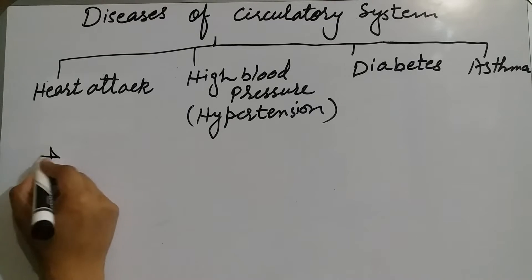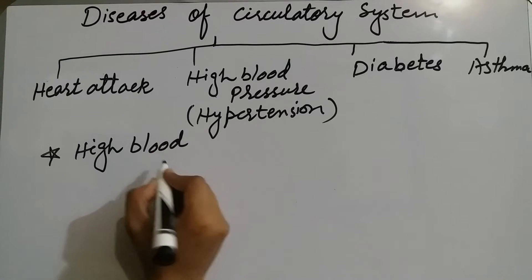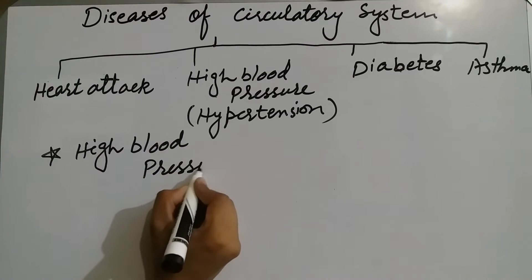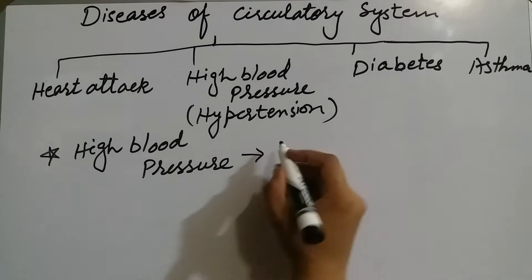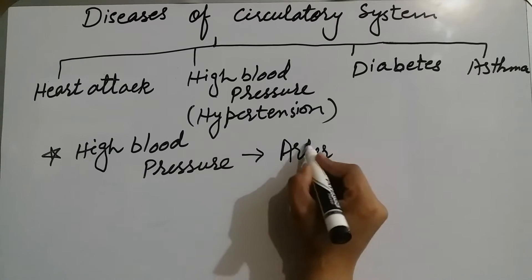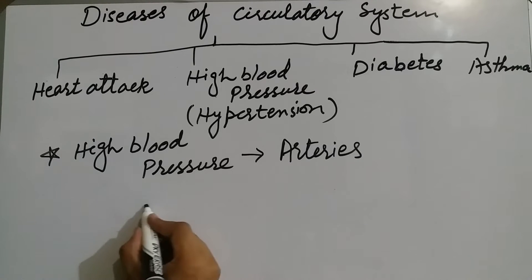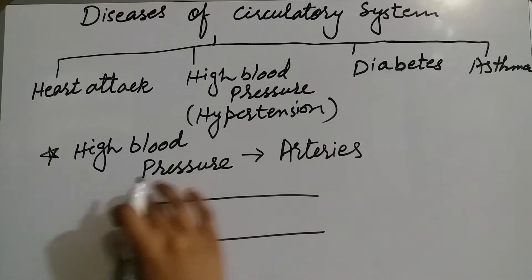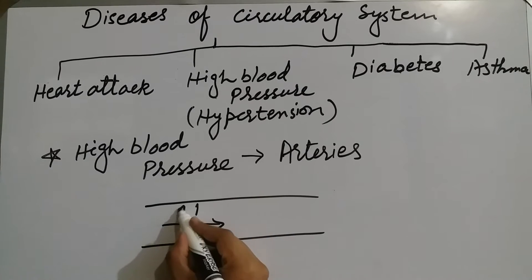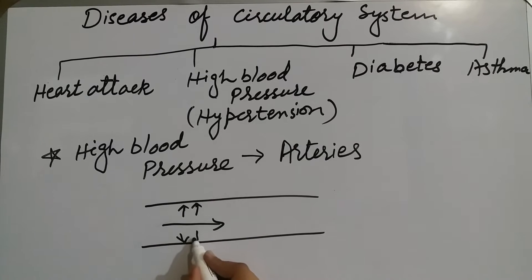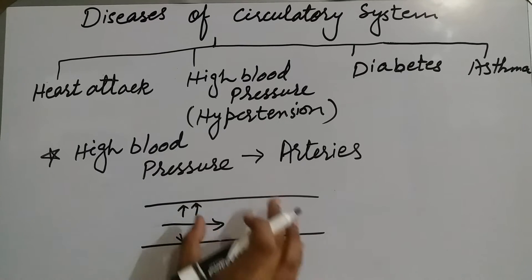High blood pressure کیا ہے؟ جیسا کہ اس کے نام سے ظاہر ہے، blood کا pressure زیادہ ہونا — اور کہاں؟ in the vessels جو کہ blood کو پوری body تک لے جاتی ہیں، وہ vessels arteries کہلاتی ہیں۔ Arteries کے اندر blood کا pressure wall کے اوپر بہت زیادہ بڑھ جانا — اس کو high blood pressure کہتے ہیں۔